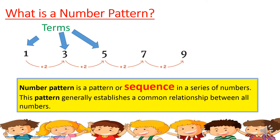Each number in a sequence is called a term. The digit 1 is the first term, 3 is the second term, and 9 is the last term in this given number pattern or number sequence.